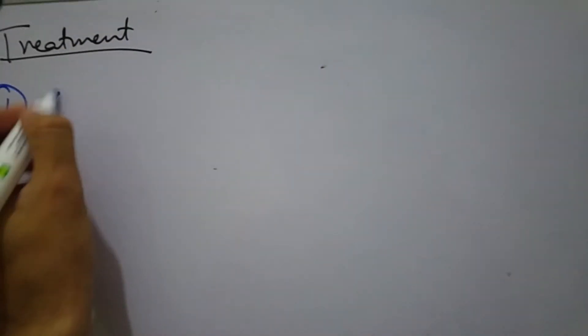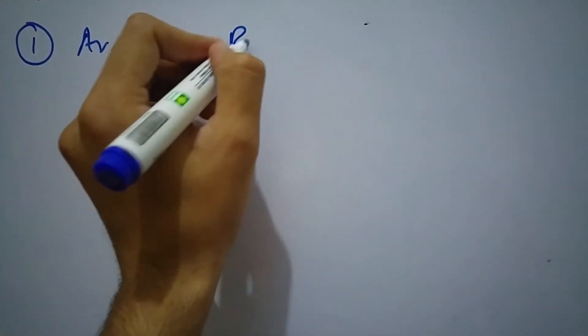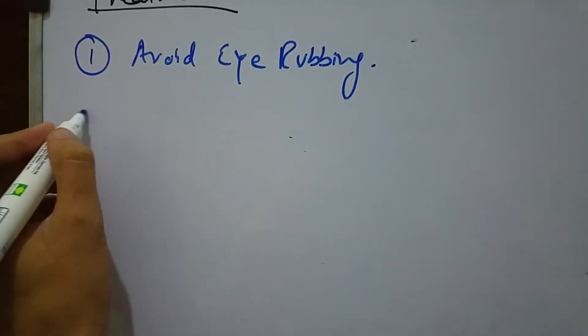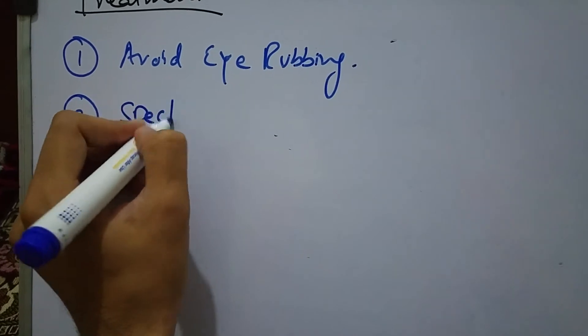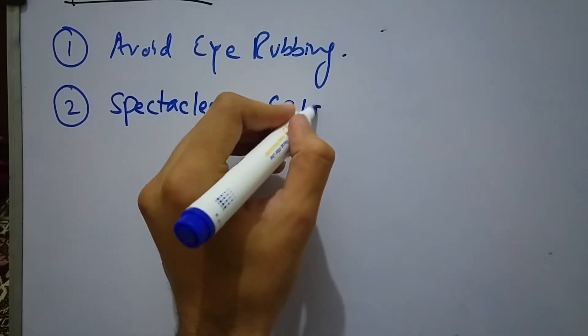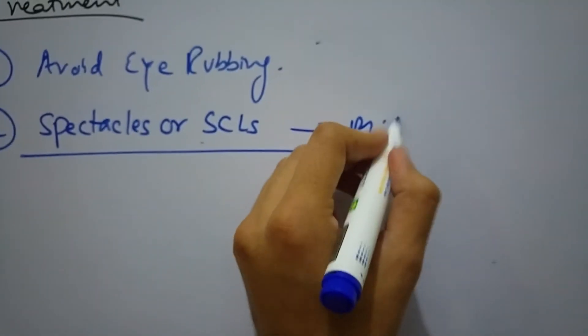For treatment, number one is avoid eye rubbing. And number two is spectacles or soft contact lenses. These are only applicable in mild keratoconus.